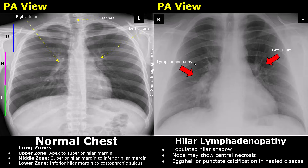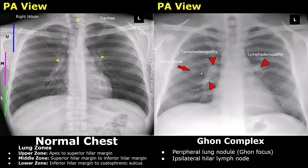Here is another case of tuberculosis where the right side is affected. When a Ghon focus along with ipsilateral lymphadenopathy is present, it is called a Ghon complex. Ipsilateral means the lymphadenopathy must be present on the same side as the Ghon focus. Here, a Ghon focus is present in the right lung and the lymphadenopathy is also present in the right lung, so this is a Ghon complex. Left hilar lymphadenopathy is also present, although less extensive than the right.